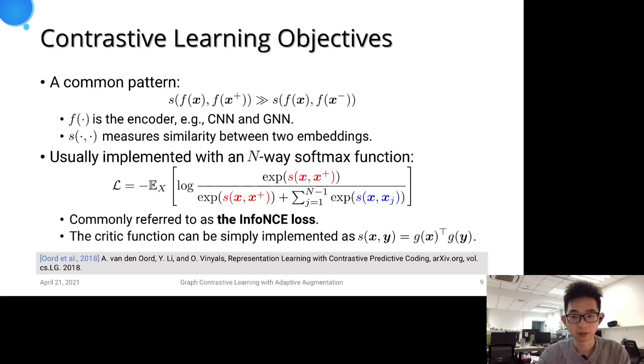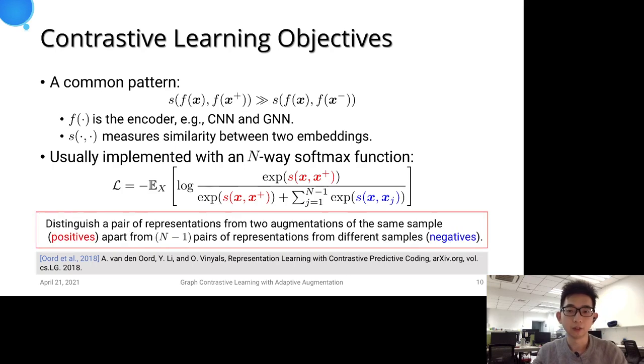We can construct an n-way softmax classifier to optimize it, which is referred to as the InfoNCE loss. The critic function here can be simply implemented as a cosine similarity function. The InfoNCE loss distinguishes a pair of representations from two augmentations of the same sample from n-1 pairs of representations from different samples.